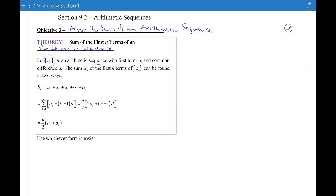Then the sum of the first n terms can be found in two ways. So this is the notation that's used, it's called a partial sum. It says sum up the first n terms of the sequence. So it's a partial sum.